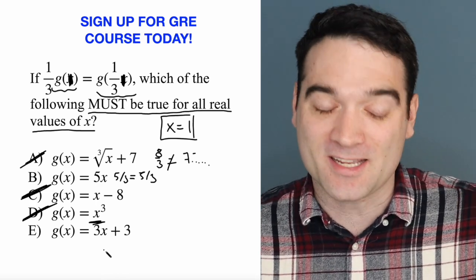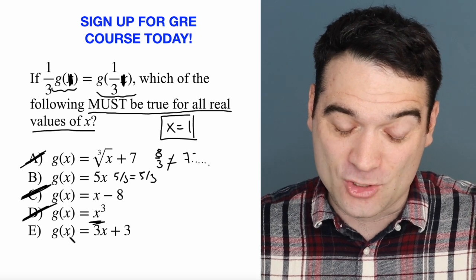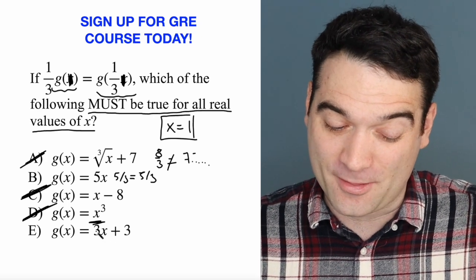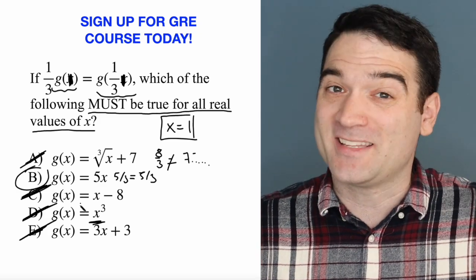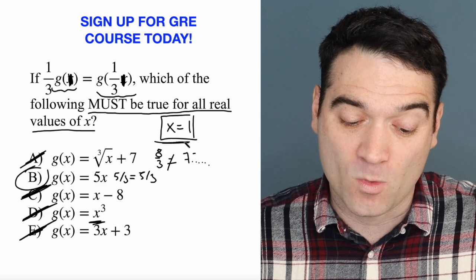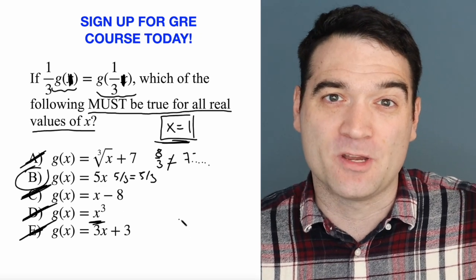g of one is equal to three plus three, six. Is that equal to g of one-third, which is three times one-third, one plus three, four? No, it's not. So the only one that works, we only had to test one answer or one option here, is answer option B.